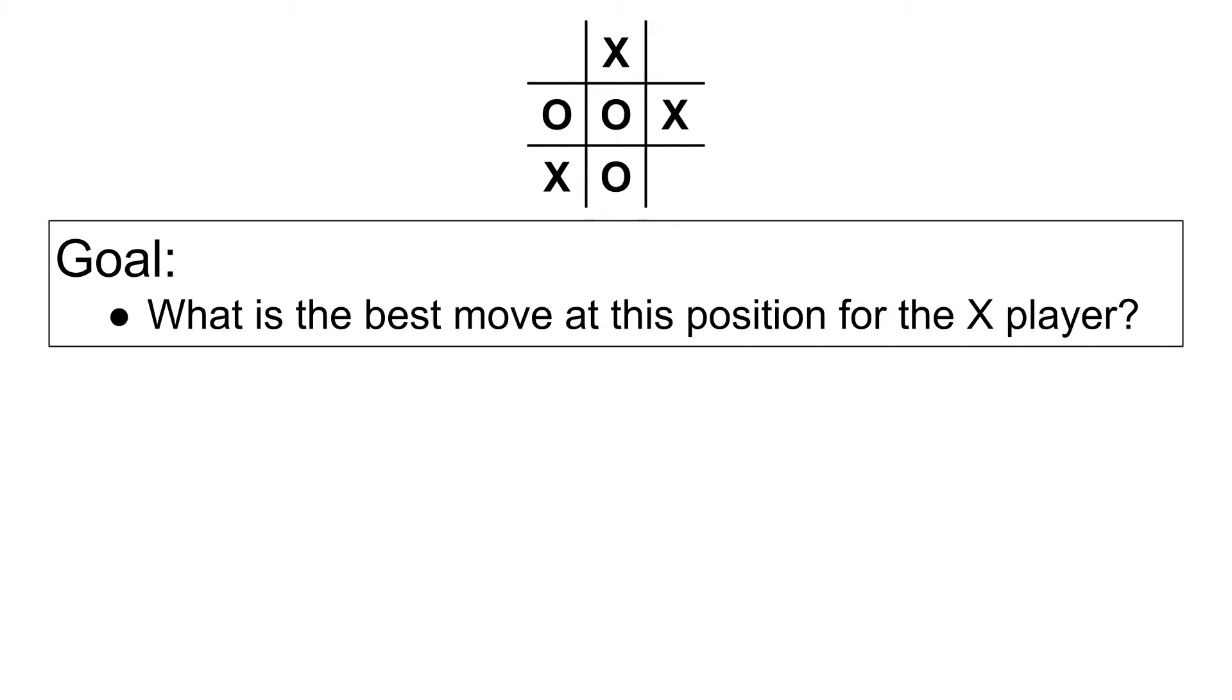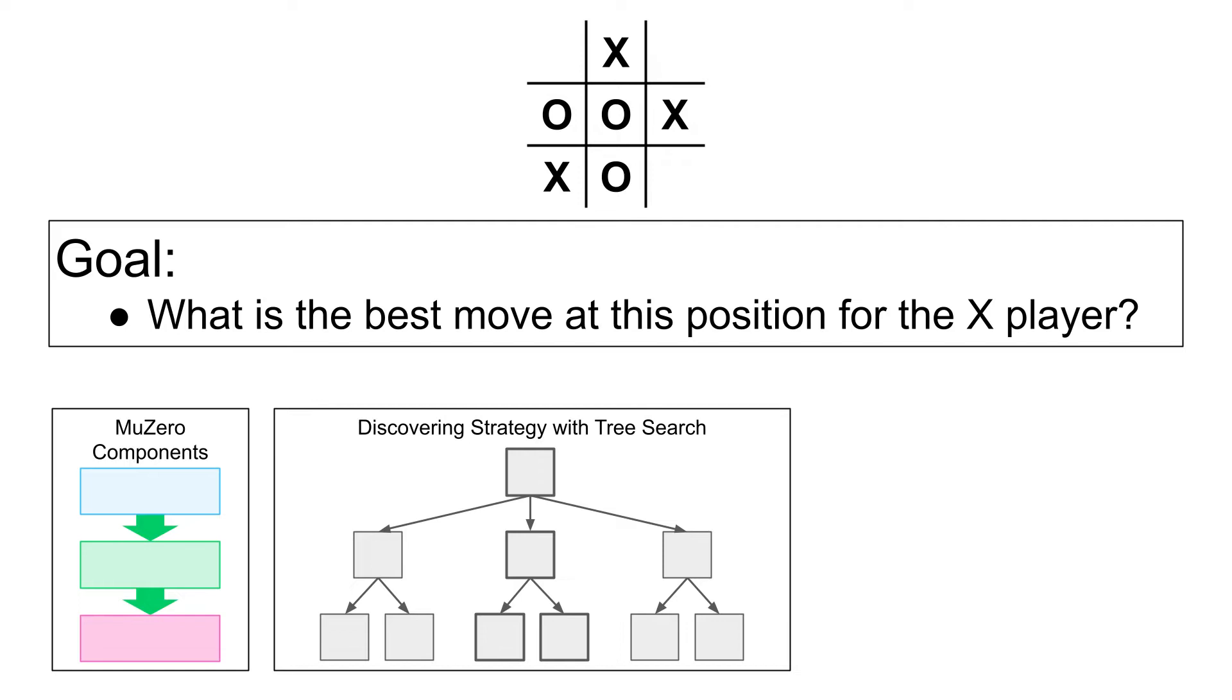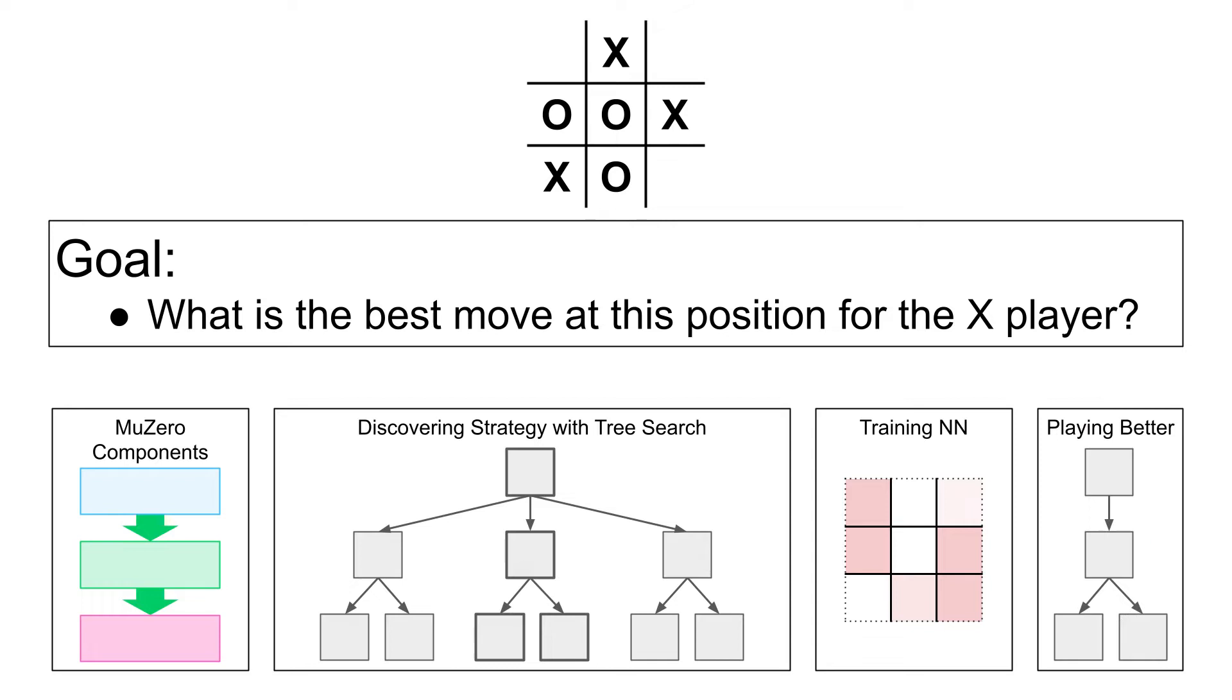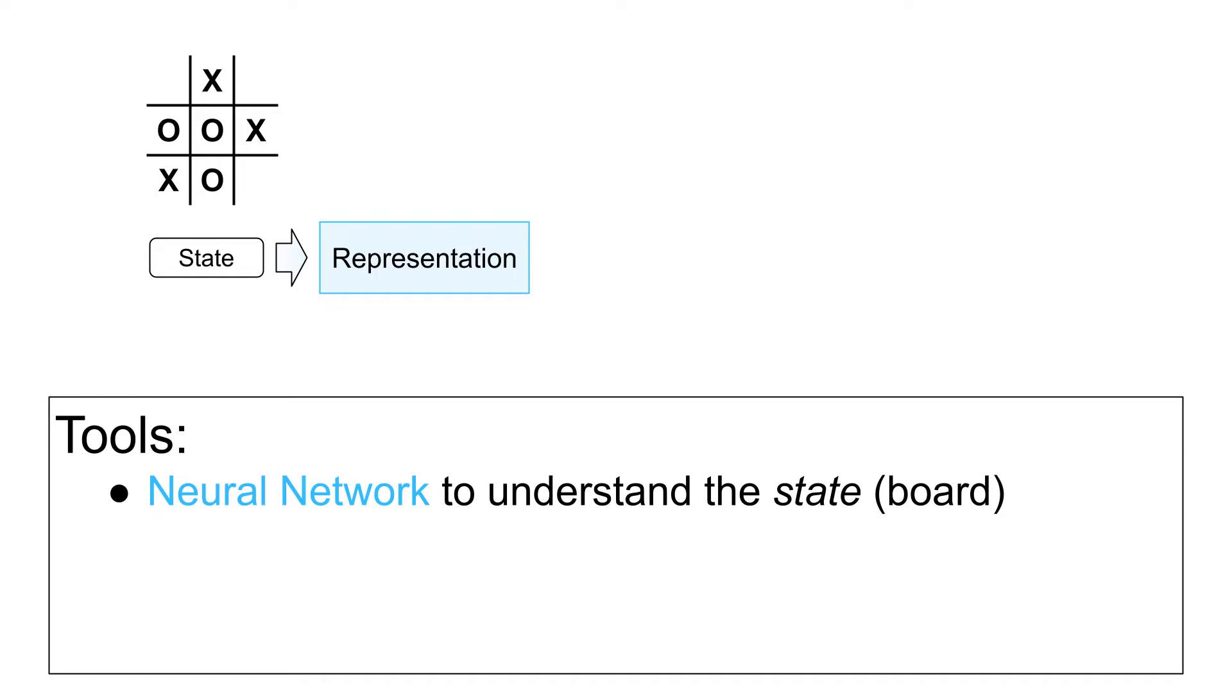First, we will look at the main components of a MuZero agent, including three connected neural networks. The bulk of this video will show how an AI technique called TreeSearch can discover a winning strategy. After that, we will see how to teach the agent the strategy discovered by TreeSearch, so it can get better and better. The video concludes with a demonstration of that improvement. The tools we need to answer our question include three neural networks, focusing on different tasks. The first is called the representation network, and it will learn to understand the board, also called the state. I think of this network as the state interpreter, because it has the state as an input, and it interprets that state for the other two networks.